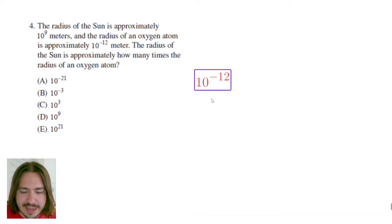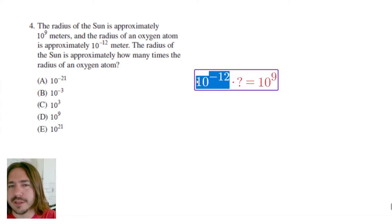So we're gonna say like it's times something equals 10 to the ninth. If you want to put an X here that's fine. But basically what you need to do is figure out what do I need to multiply to get from 10 to the negative 12th to 10 to the ninth.